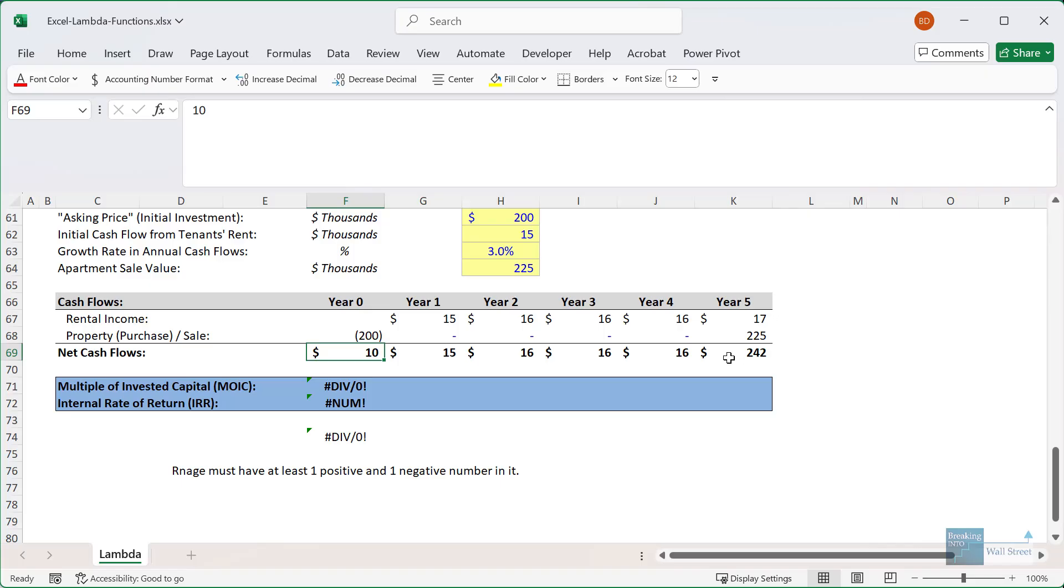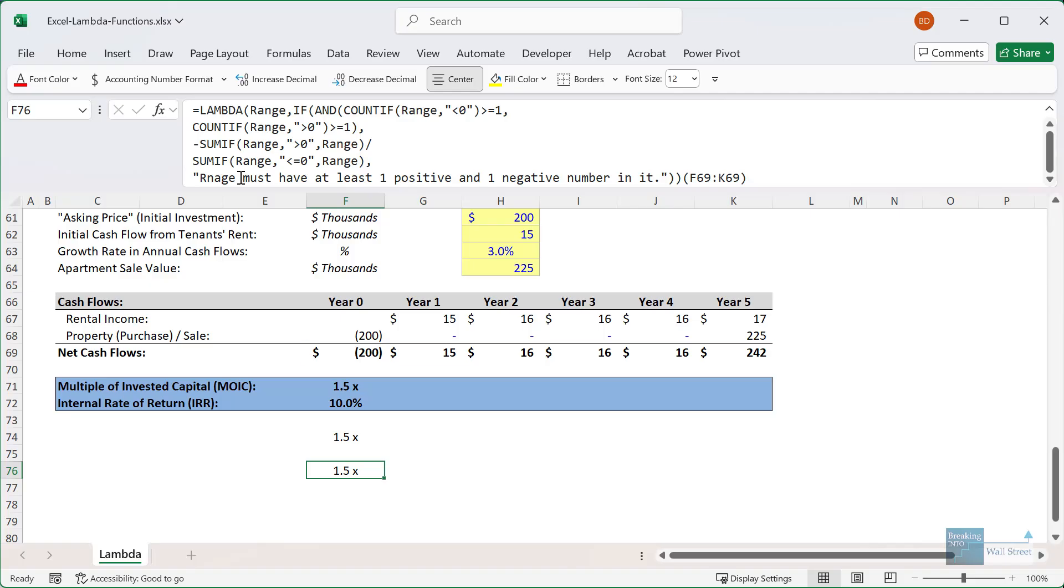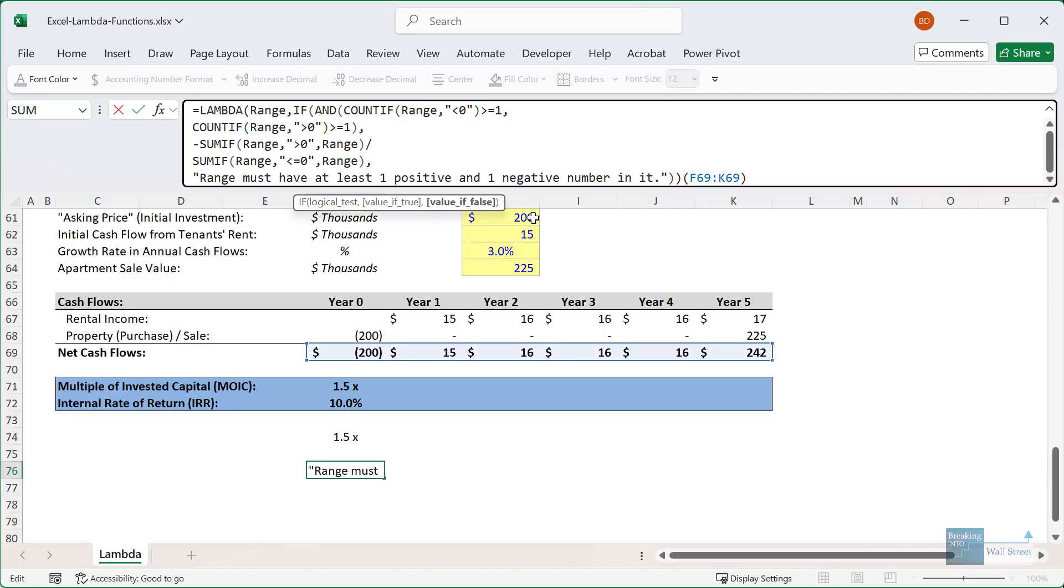And this time, if we insert some invalid numbers, so we have all negatives, we get that error message. And then, likewise, let's say that we go in and we enter all negative numbers right here. If we don't have a positive number in the range, we also get this error message right here. I misspelled range in the error message. So let me go back and fix that, range must have at least one positive and one negative number in it.